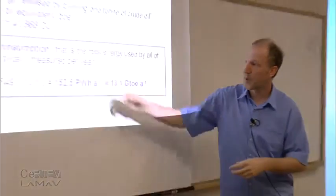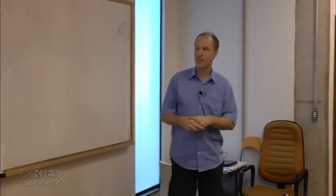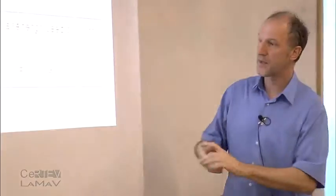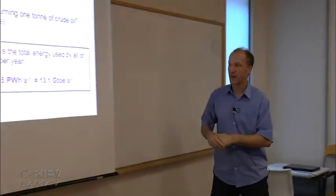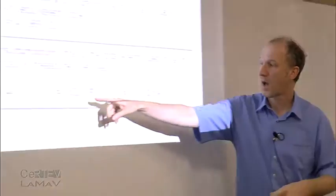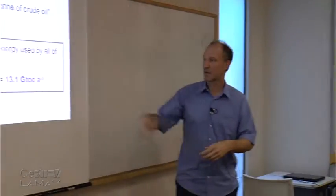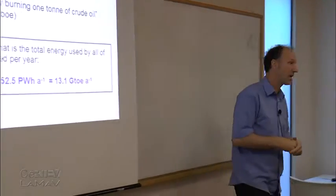In statistics, numbers are given either in BTU or TOE units. The primary energy consumption of the whole world in 2012 per year is 550 exajoules, which is about 152 petawatt-hours per year, or 13 gigatons per year of crude oil equivalent burned. Very large numbers.